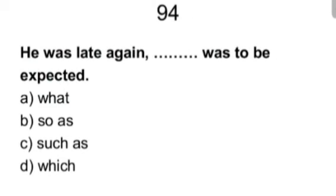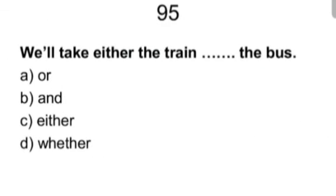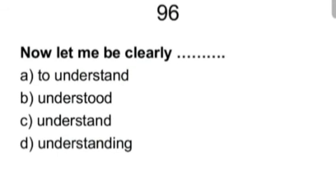Move on to question number ninety five. We will take either train blank the bus. Or, and, either, whether. Answer is or. We will take either the train or the bus. Ninety six. Now let me be clearly blank. To understand, understood, understand, understanding. Answer is understood. Now let me be clearly understood. Excuse me, let me be clearly understood. It is in passive form. Active, you can write, do understand me.